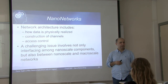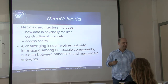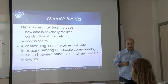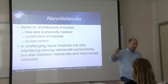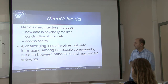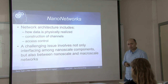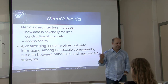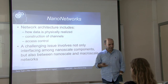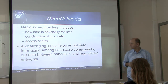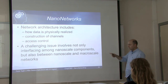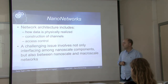The channel might be formed explicitly, for example in gap junctions or tunneling nanotubes. Access control is also an issue — multiple cells trying to transmit will create interference or collisions. A challenging issue involves not only interfacing among nanoscale components but also between nanoscale and macroscale networks, as we've already discussed.